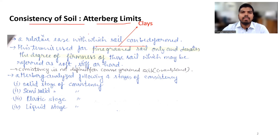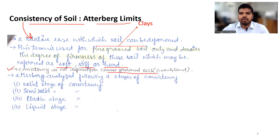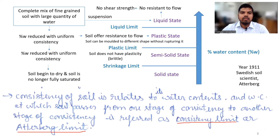Soil consistency, represented by the Atterberg limit, is the relative ease with which soil can be deformed. This term is used for fine-grained soil, especially for clay, and denotes the degree of firmness of the soil, which may be referred to as soft, stiff, and hard. Consistency is not defined for coarse-grained soil such as gravel and sand. The Atterberg limit states that consistency of soil is related to its water content, and the water content at which soil passes from one stage of consistency to another is referred to as the consistency limit or Atterberg limit.